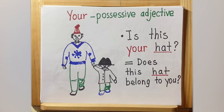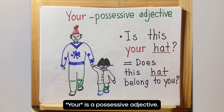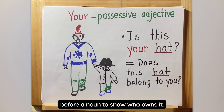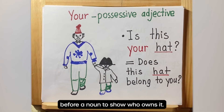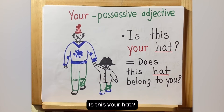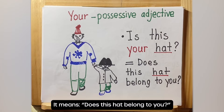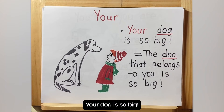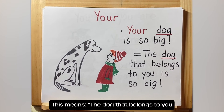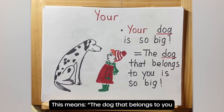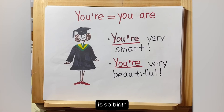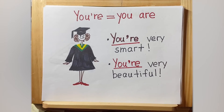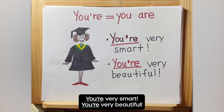'Your' is a possessive adjective. We put a possessive adjective before a noun to show who owns it. For example: 'Is this your hat?' — it means does this hat belong to you. 'Your dog is so big' means the dog that belongs to you is so big. 'You're' is a contraction of 'you are': 'you are very smart.'